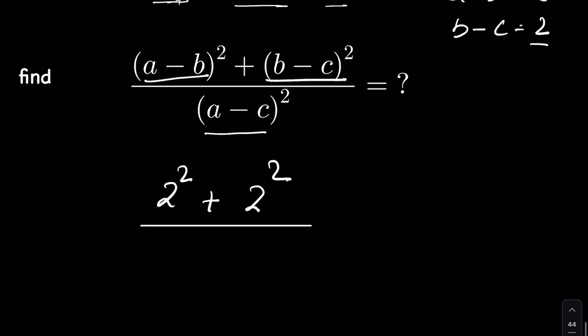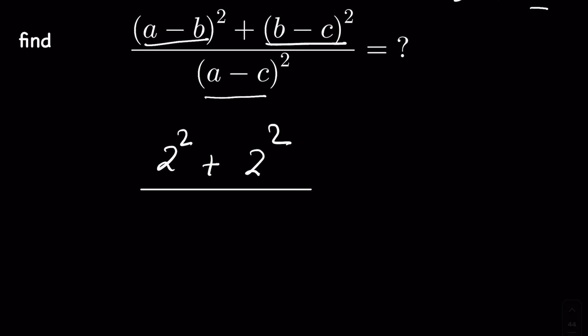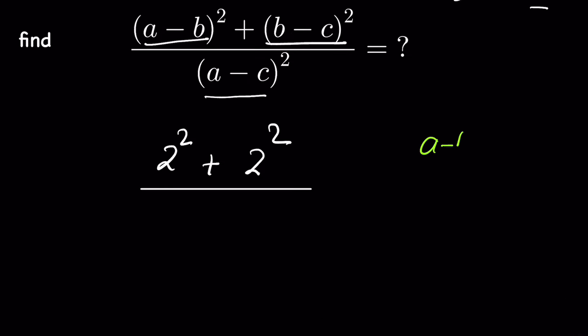A minus C we do not know. So what if we add A minus B plus B minus C these two? So A minus B is 2 and B minus C is 2.